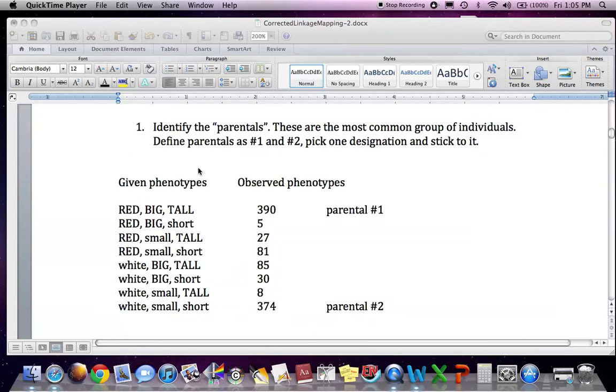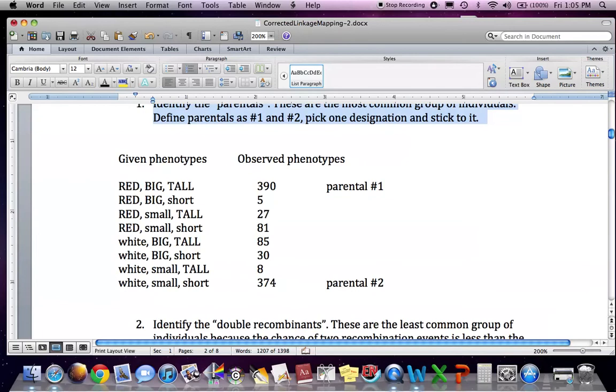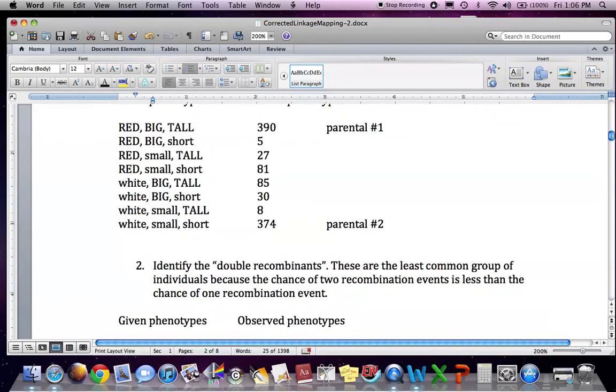So this is the same .doc file I posted on the website. The first thing you want to do is identify the parentals. These are the most common group of individuals. Then you want to define parentals as number one and number two, pick one designation and stick to it. So you got parental number one and parental number two here. They're the most common.